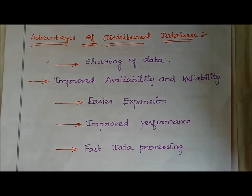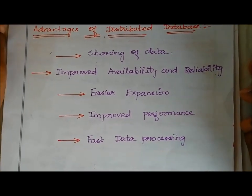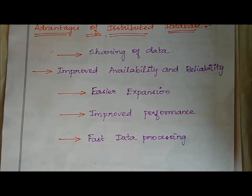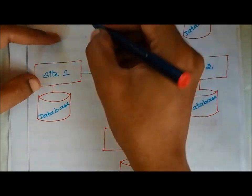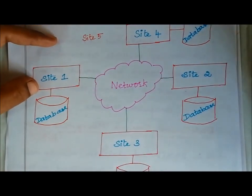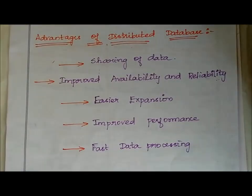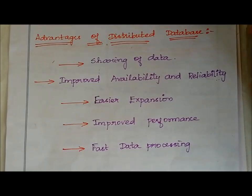Also, if there is any system failure or network failure, the data is still available — that is improved availability and reliability, and robustness of the distributed database. Next, easier expansion — we can easily add a new site, for example Site 5, to the architecture. Improved performance — data processing is faster because data retrieval and management happen across multiple distributed locations.